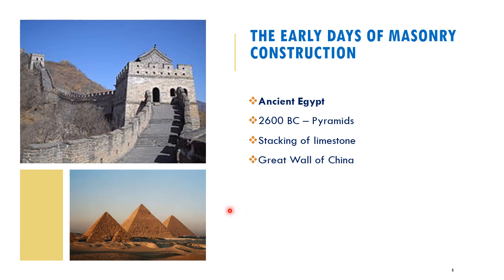When it comes to the pyramids, the type of masonry used was limestone — the individual units were made of limestone. The Great Wall of China initially used stones, and then clay bricks were added after a thousand years when it was initially constructed. So that's where the whole concept of masonry structures started, back in 2600 BC.